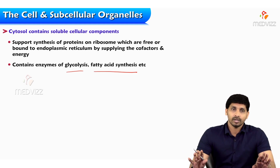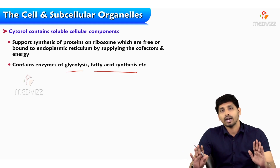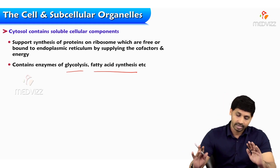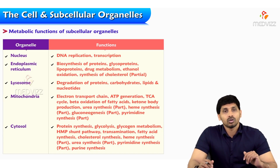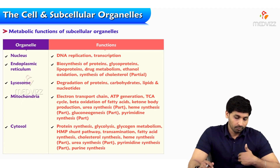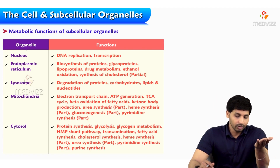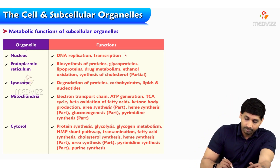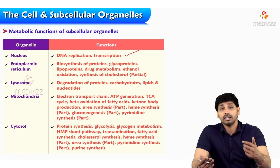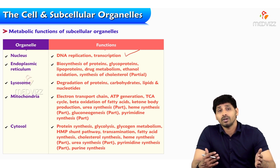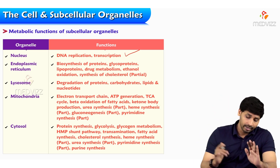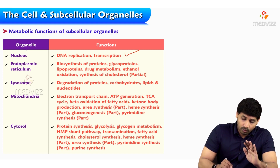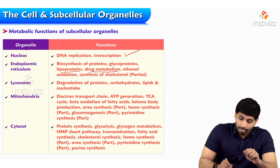Cytoplasm is rich in proteins and enzymes of glycolysis and fatty acid synthesis. To summarize the metabolic functions of overall subcellular organelles: the nucleus is useful in DNA replication and transcription — transcription is the synthesis of mRNA from DNA. The endoplasmic reticulum handles biosynthesis of proteins, glycoproteins, lipoproteins, drug metabolism, ethanol oxidation, and synthesis of cholesterol.